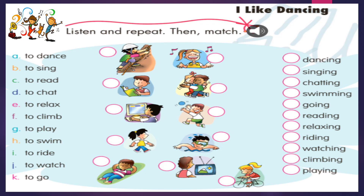Entonces ahora vamos a unir estas actividades con la otra columna de verbos que termina en ING. We have here dancing, singing, chatting, swimming, going, reading, relaxing, riding, watching, climbing and playing. Y también tenemos en medio de estas dos columnas las imágenes que corresponden a estas actividades. Vamos a unir la primera columna, los verbos que empiezan con el infinitivo to, con la columna de verbos que terminan en ING form: dancing, singing, chatting. Y también con la imagen que corresponde.